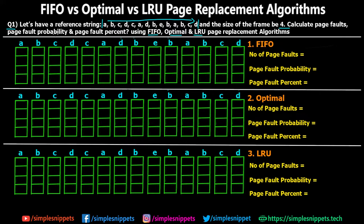Let's start with FIFO. I've already written the reference string at every step. Starting off, since there are no pages in the frame, a page fault is going to happen and page A is going to be loaded. Moving to step two, A is already there but B is requested and not in the frames, so B is loaded — another page fault. Similarly for C and D: C is loaded as a page fault, then D is loaded as a page fault. So initially for the first four steps, four page faults happened because there was nothing in the frames.